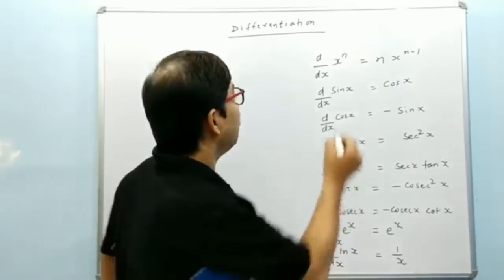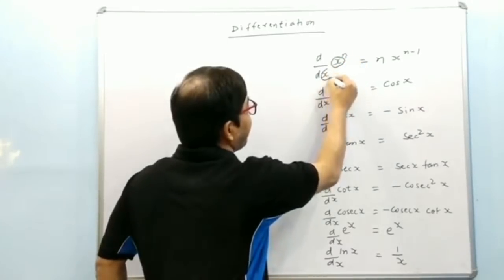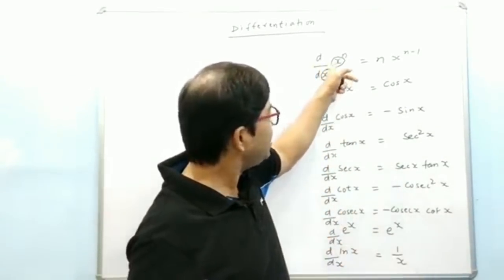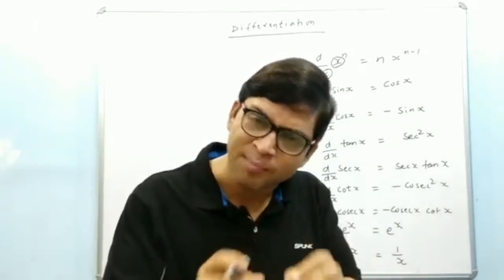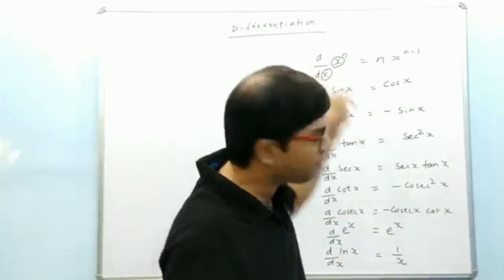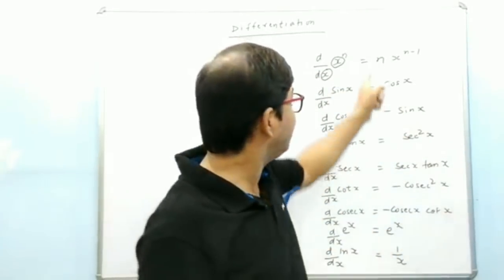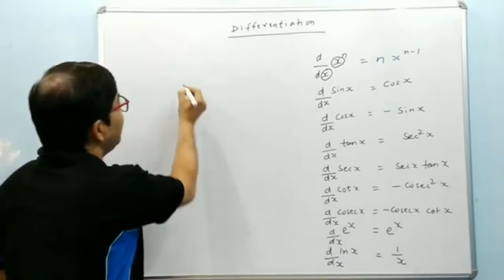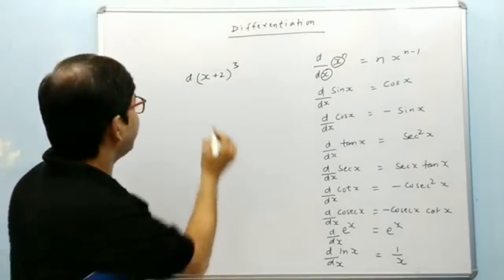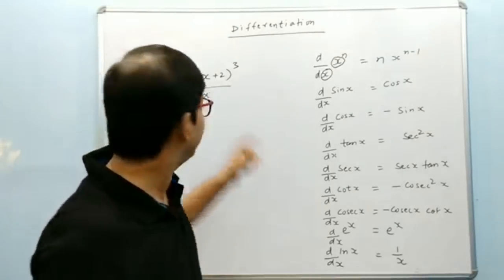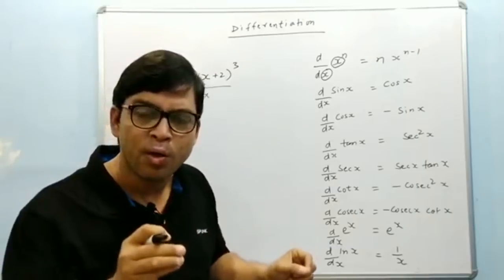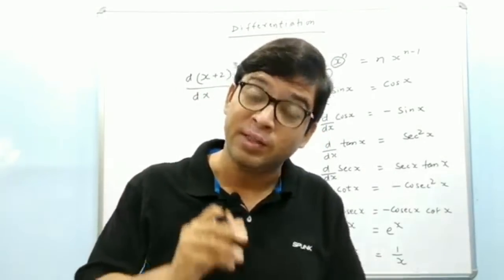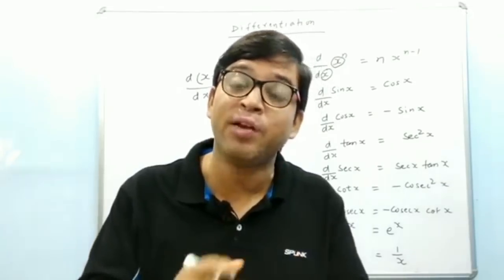See what's the key — whatever is here, the same thing should be here, then only we are getting the output. This is differentiation of something to the power n. 'Something' means some variable — it can be anything — with respect to that same thing only, and the result will be n into that thing to the power n minus 1. Whatever thing is here, it will give result with respect to that thing only. That is the basic of chain rule — we have to manipulate and make the arrangement so that differentiation is possible.